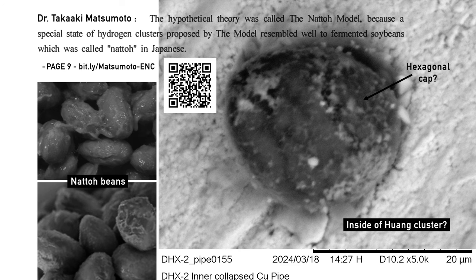Hi, my name is Bob Grunier and I'm a volunteer with the Martin Fleischmann Memorial Project. We're going to take one more look at the DH-X-2 collapsed pipe from the Benjamin Huang et al. reactor.